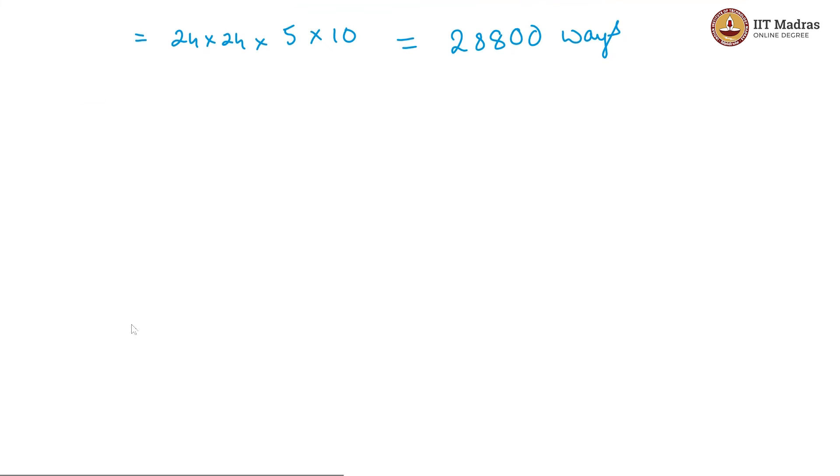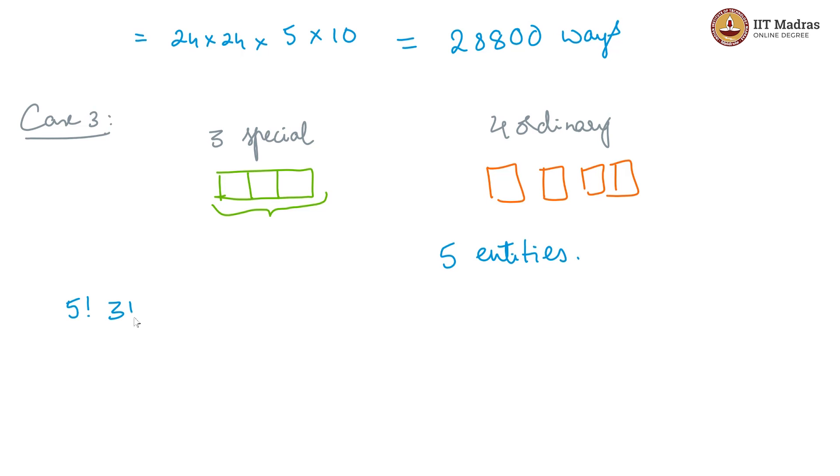That leaves us with case 3 which is 3 special and 4 ordinary. These 3 special they come together like this as a special sequence whereas the 4 ordinary gives us 4 independent entities. This time we have 5 entities leading to 5 factorial permutations of these entities. And again, each of these permutations will have to consider the permutations within the special sequence. Therefore, that is 3 factorial.